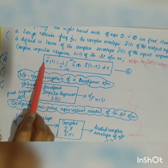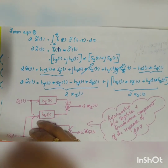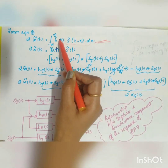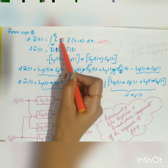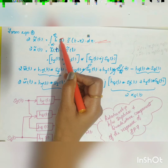From Equation 6, rearranging gives: 2·x̃(t) = ∫ from −∞ to ∞ of h̃(τ) · s̃(t−τ) dτ, which is the convolution formula. So 2·x̃(t) = h̃(t) * s̃(t). Now h̃(t) can be written in terms of in-phase and quadrature components as h̃(t) = hi(t) + j·hq(t), and similarly s̃(t) = si(t) + j·sq(t).